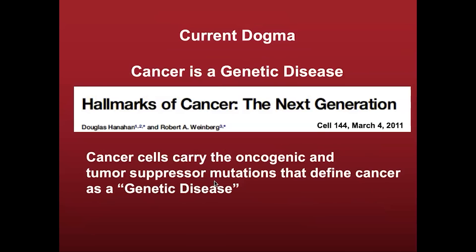The current dogma about cancer is that cancer is a genetic disease. This paper, published by Doug Hanahan and Robert Weinberg, 'Hallmarks of Cancer: The Next Generation,' is one of the most highly cited papers in all of the field of biology. The take-home message is that cancer cells carry the oncogenic and tumor suppressor mutations that define cancer as a genetic disease. This dogmatic view is present in all major textbooks of biology, biochemistry, and cell biology, and also on the website from the National Cancer Institute. This dogmatic view has indoctrinated several generations of physicians and scientists into the view that cancer is caused by somatic mutation.